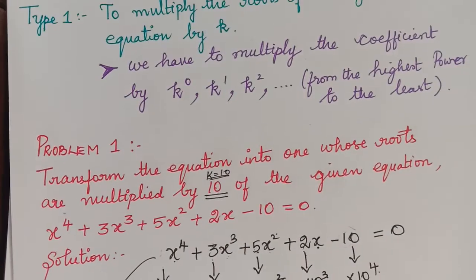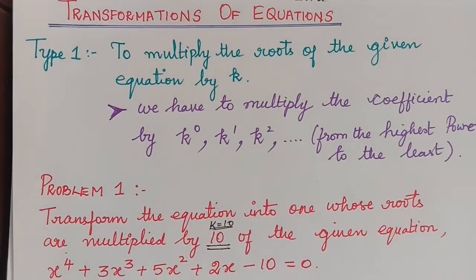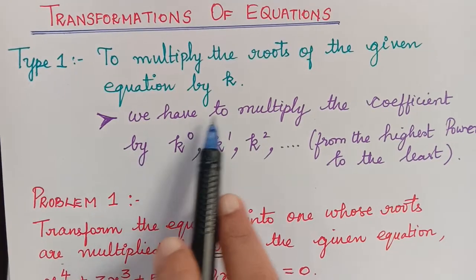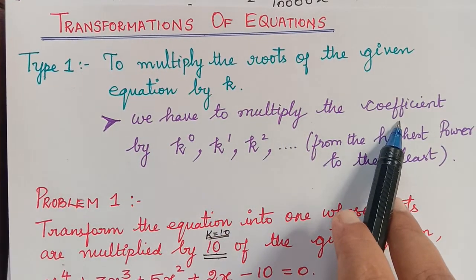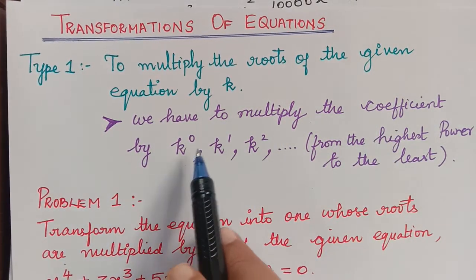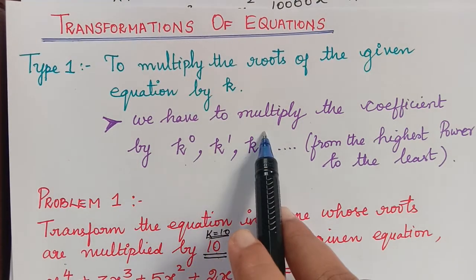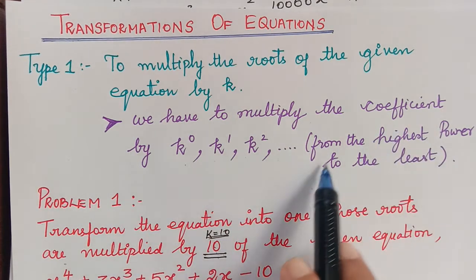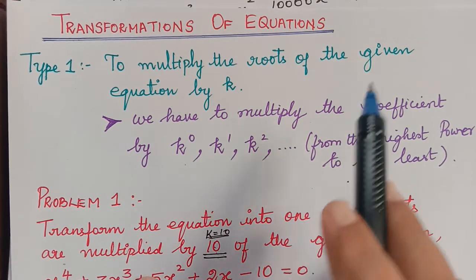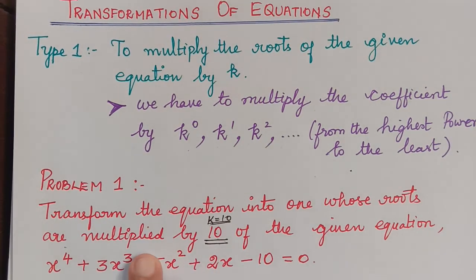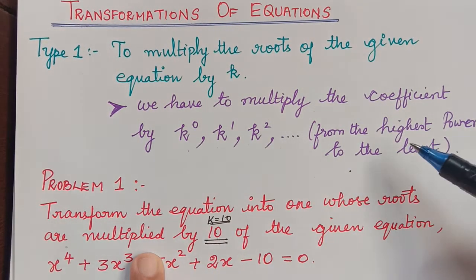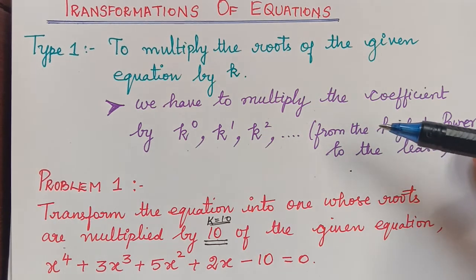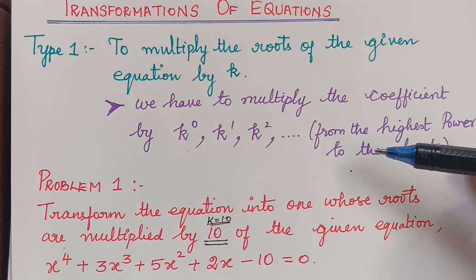To summarize: to multiply the roots of a given equation by k, multiply the coefficients by k power 0, k power 1, k squared, and so on, from the highest power to the least. These are quite important concepts that will be helpful in future problems. Next we will learn the topic of diminishing the roots by a particular value. Thank you.